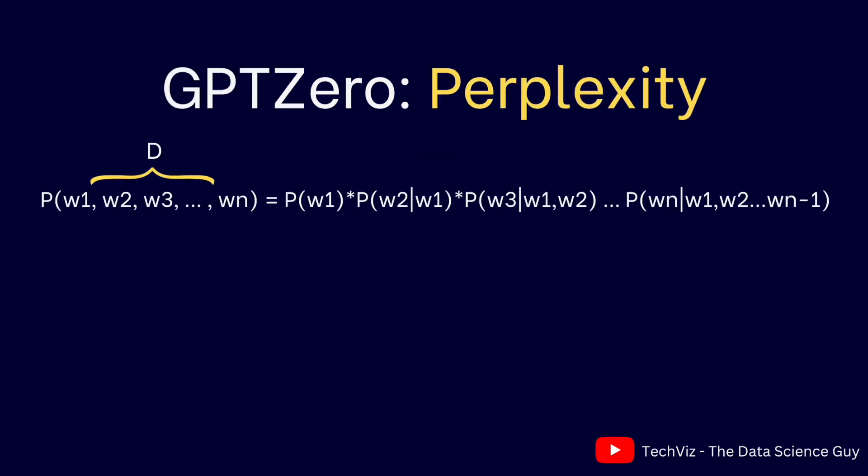Talking about perplexity — consider you have a document d that has n words going from w1 to wn. If you want to calculate the likelihood of that document, you would do the multiplication of probabilities for the word you are seeing at time t, based on whatever words it has generated in the past. So the formula p(w1 to wn) expands to p(w1), which is the first word; then when we want to generate the second word, we look at what the first word was and multiply accordingly, and we unroll this formula until we are at the n-th word.